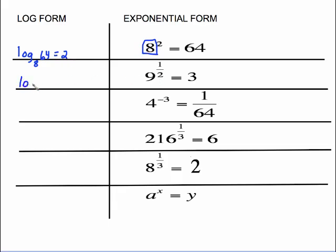This log base 9 of the 3 equals the 1 half, because the exponent is what's standing alone. Log base 4 of 1 over 64 equals negative 3. This log base 216. It's okay for the base to be pretty big. Log base 216 of 6 equals 1 third. Keep in mind, the base of the exponential expression remains the base of your logarithm expression. The other thing is your exponent is going to be the number that stands alone over here.